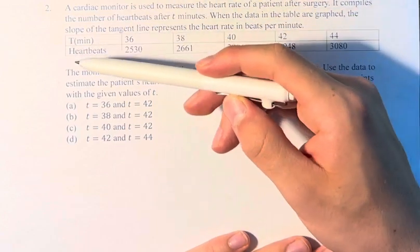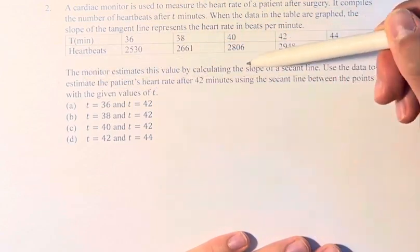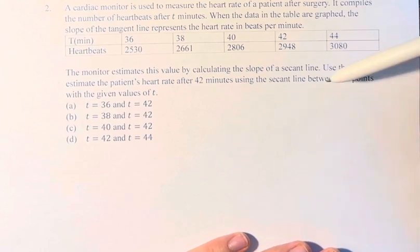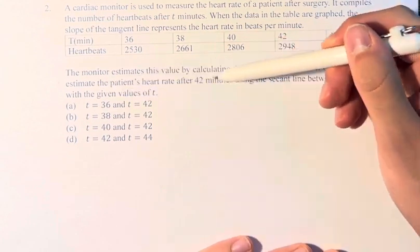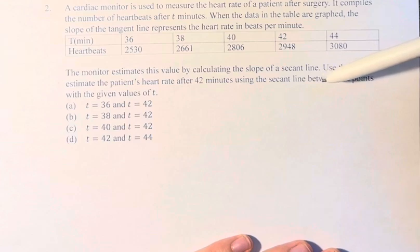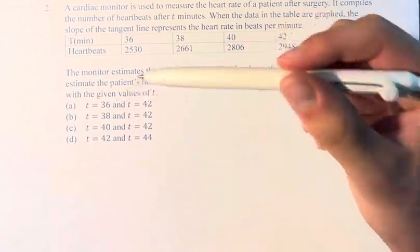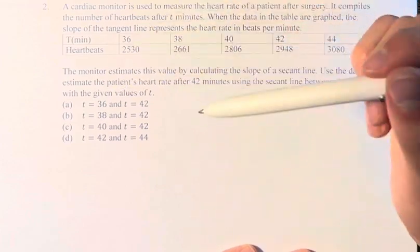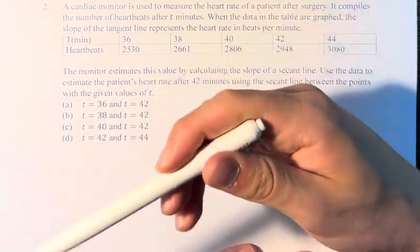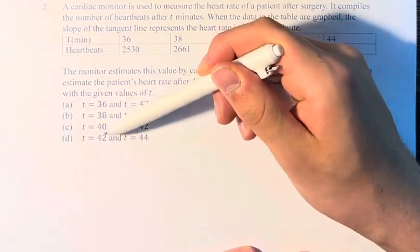So we have our points here. We're told the monitor estimates this value by calculating the slope of a secant line. Use the data to estimate the patient's heart rate after 42 minutes, using the secant line between the points with the given values of t. So we're asked to create a secant line between the points at t equals 42 and 36, 38, 40, and 44.